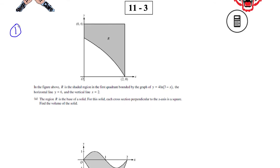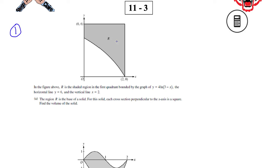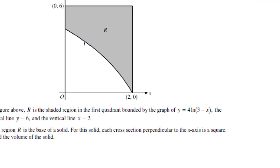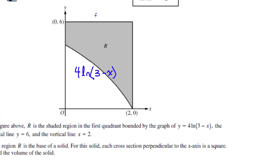Number one: in the figure of R, the lower function is 4 natural log of (3 minus x), and the top function is y equals 6, and x equals 2 because that's where it stops. I'm going to label what's happening in this diagram. The bottom function is 4 natural log of (3 minus x), and the top function is y equals 6.